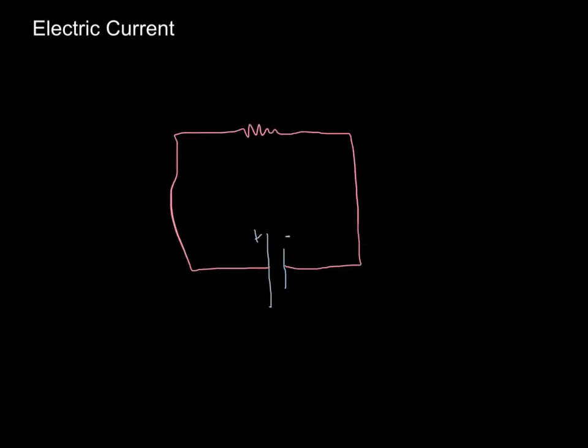Current, in this case, we define it as always from a battery flowing from positive to negative. So the current would move around our loop in that direction, in a clockwise fashion here.